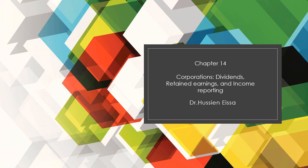Chapter 14: Corporations — Dividends, Retained Earnings, and Income Reporting. We discuss this chapter by using some examples and exercises.